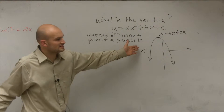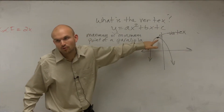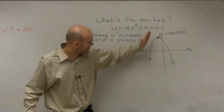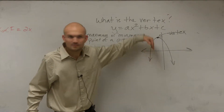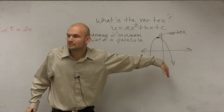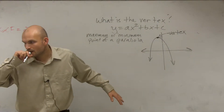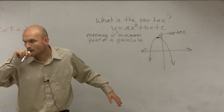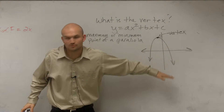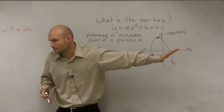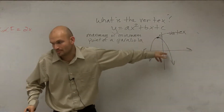Now, you might look at this graph and say, I see the vertex right there. But is there going to be a minimum for this graph? Well, this graph continues to go infinitely to the negative, so there's never going to be a minimum. All the parabola is just the shape of this graph — just like what we call a line, this is what we call a parabola.